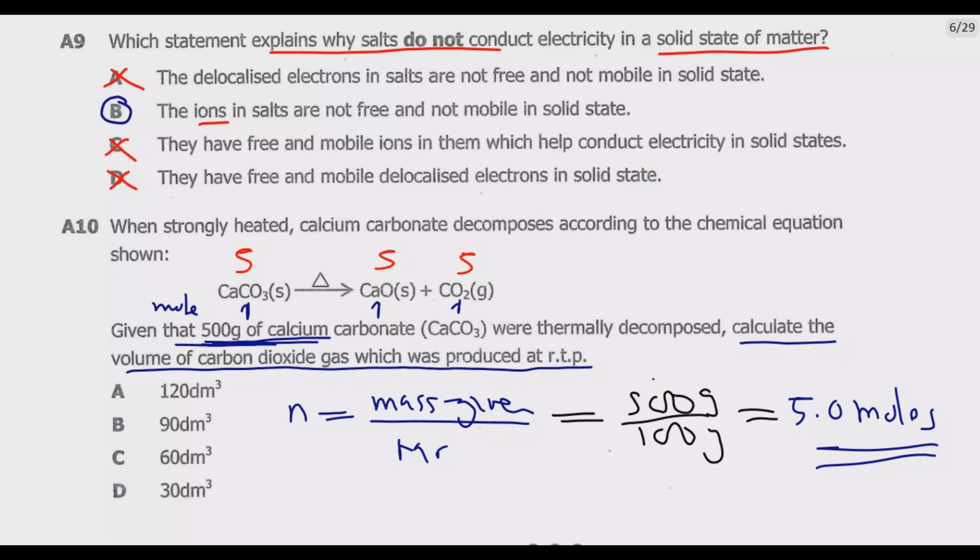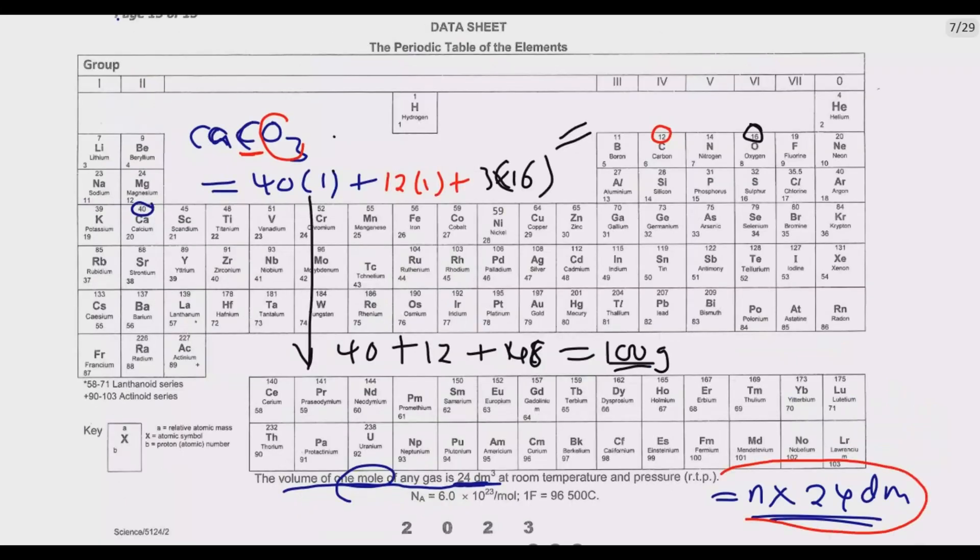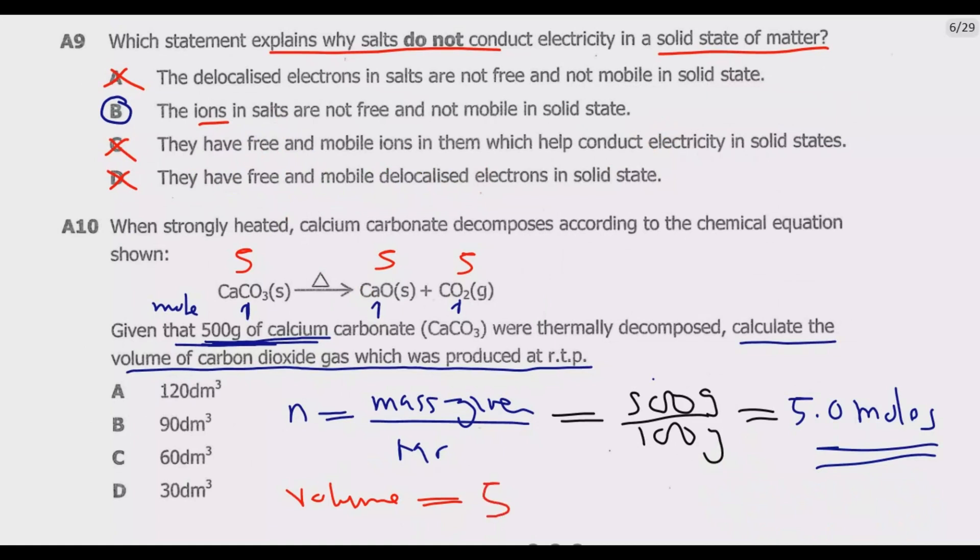It will be 5 × 24 dm³. So once we do that multiplication, what are we going to end up with? 5 × 4 is 20, write 0 carry 2, 5 × 2 is 10 plus 2 is 12. So we are going to have 120 dm³. This will be the answer. You notice that A is the correct answer in this case.